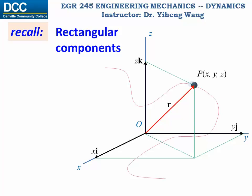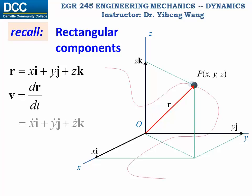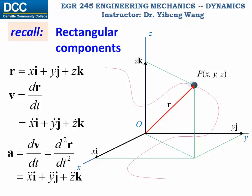As a review, we have already learned about curvilinear motion represented in the three-dimensional rectangular coordinate system. The position of the particle is written in Cartesian vector form as xi plus yj plus zk. Its velocity is dr/dt, which is x-dot i plus y-dot j plus z-dot k. And its acceleration is the derivative of velocity with respect to time, or the second derivative of position with respect to time, and it equals x-double-dot i plus y-double-dot j plus z-double-dot k, where x, y, z double dots represent the second derivatives with respect to time.